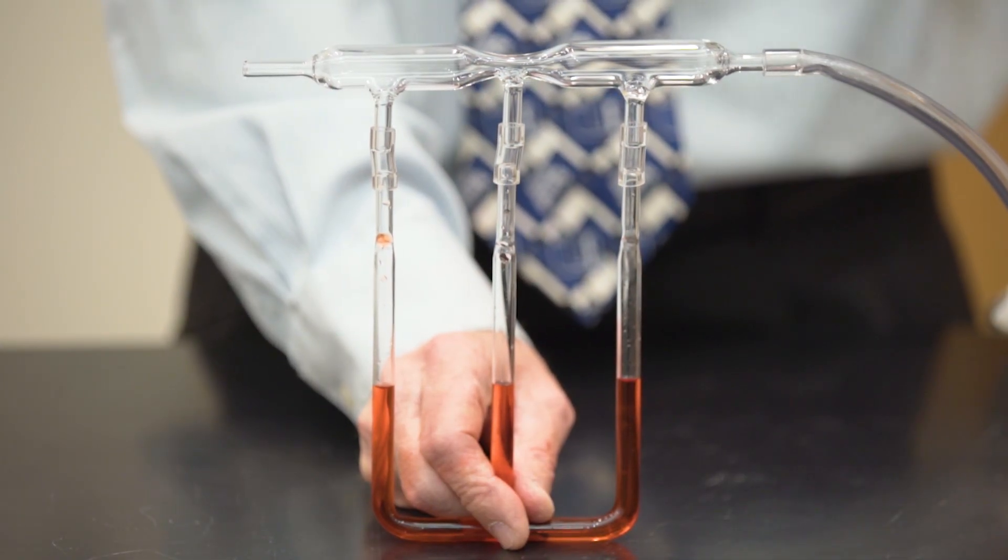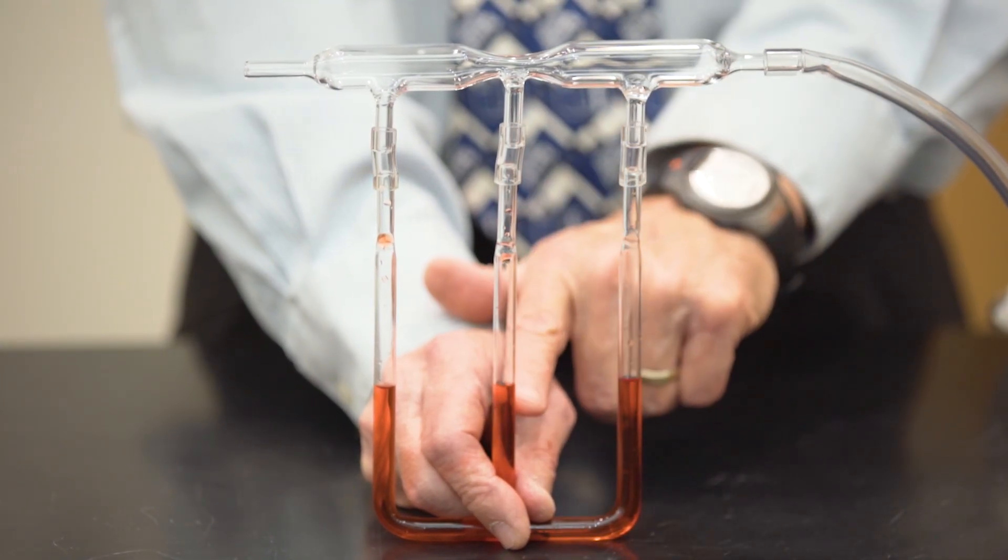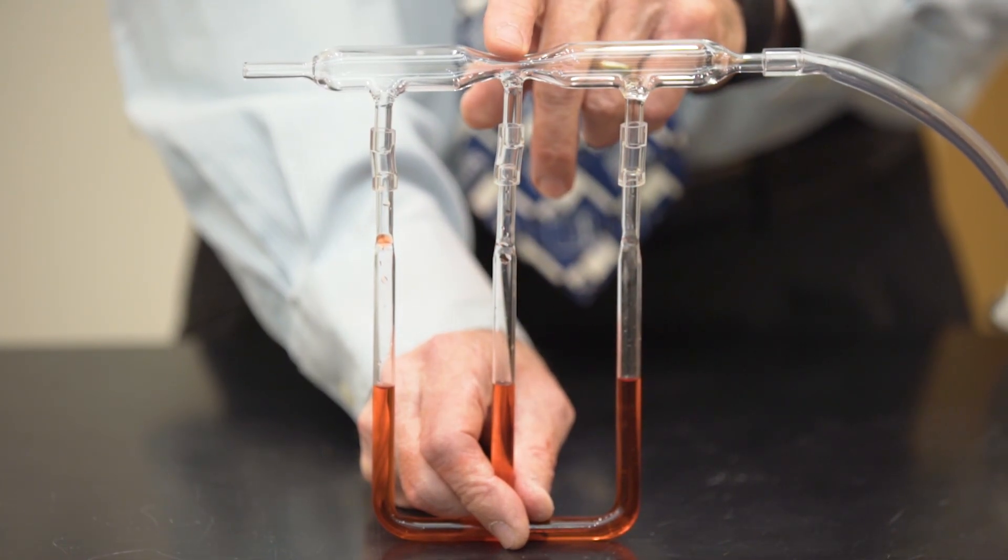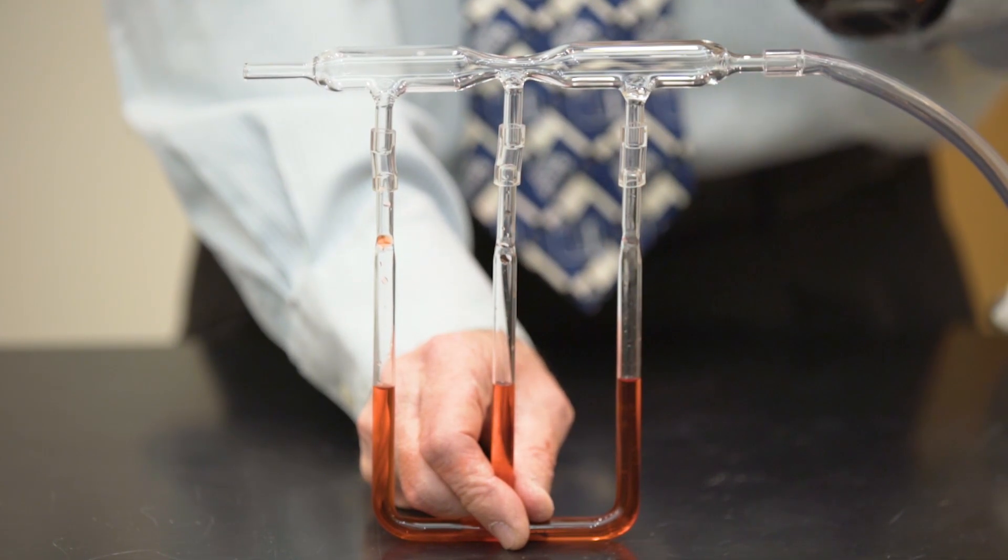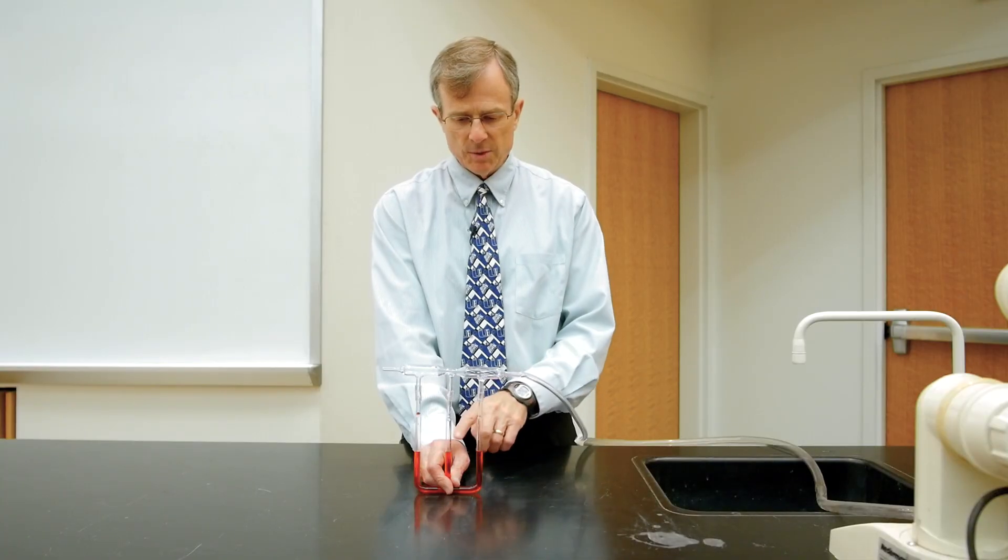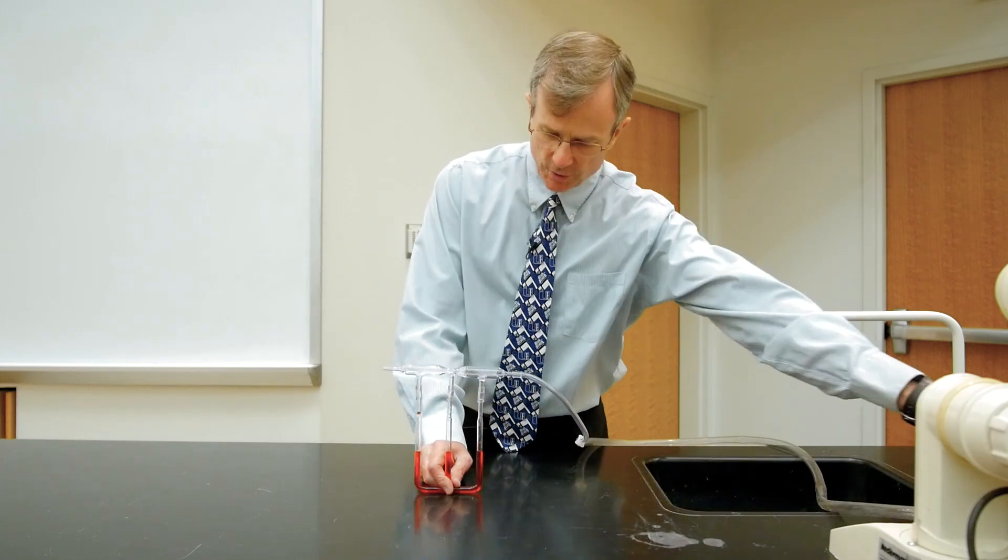when we turn on the air, this column of water in the middle will rise because the pressure here is lower and essentially acts as a suction for the water. So this one will rise higher than either of the other two.